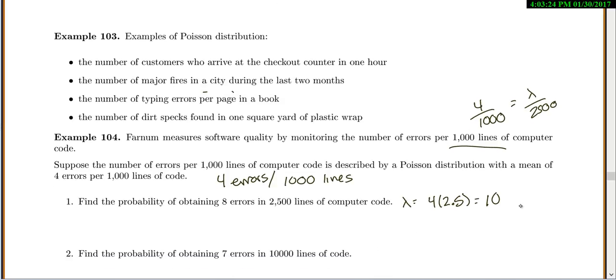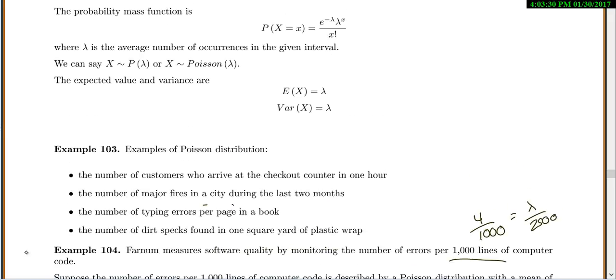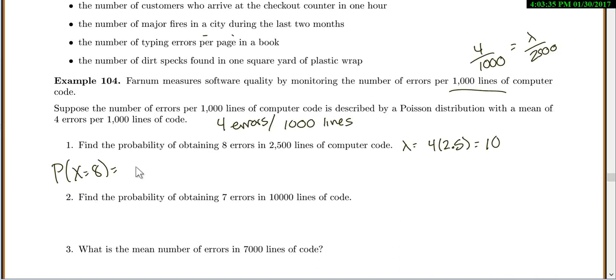Okay, so we have λ. Now you just plug everything in. So the probability that X equals 8 is, come back up look at your formula, e^(-λ) λ^x / x!. So in our case we'll have e^(-10) times 10^8 over 8 factorial. And this is 0.1125.